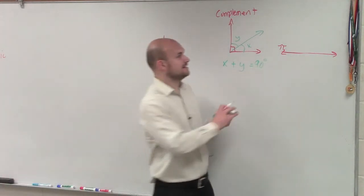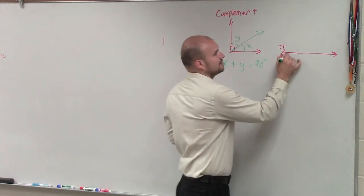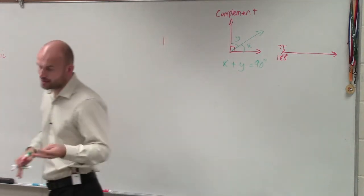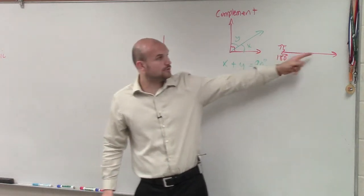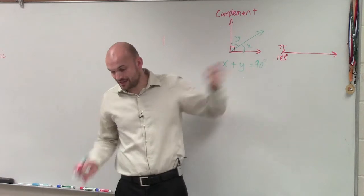So we understand that a straight line is a straight angle, which is 180 degrees. But in radian form, it's pi radians.